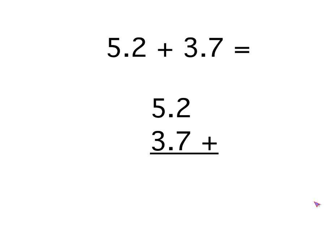The units digits, the 5 in the 5.2 and the 3 in the 3.7, they line themselves up nicely as do the tenths digits, the 2 and the 7, as shown. So the main point to remember is line up the decimal point. Everything else follows.